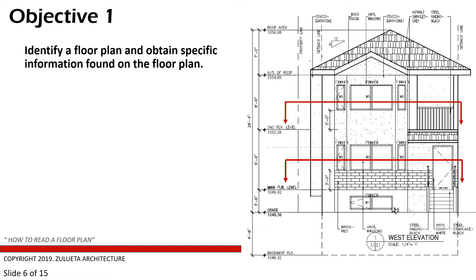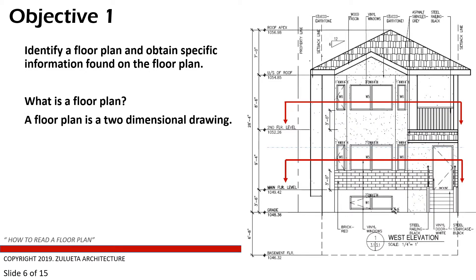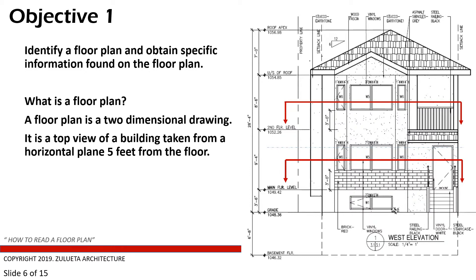Objective one: identify a floor plan and obtain specific information found on the floor plan. What is a floor plan? A floor plan is a two-dimensional drawing — a top view of a building taken from a horizontal plane five feet from the floor. The red arrow and red line represent this horizontal plane. When you cut that horizontal plane five feet from the floor and look down below, it gives you the floor plan.